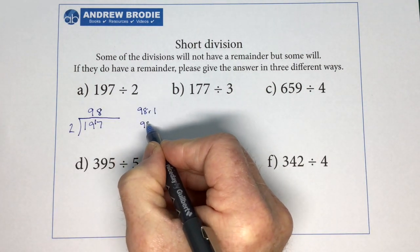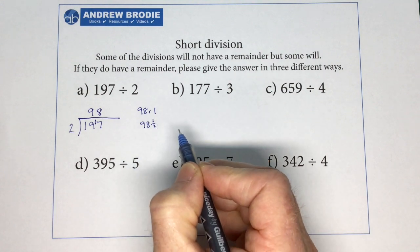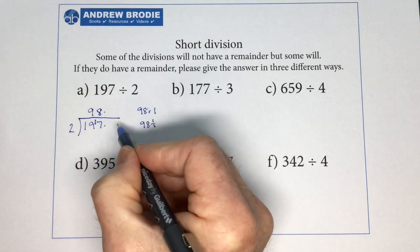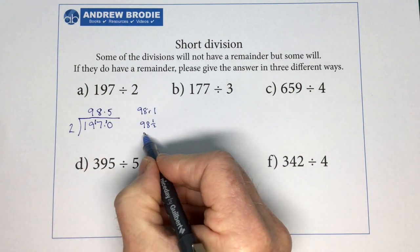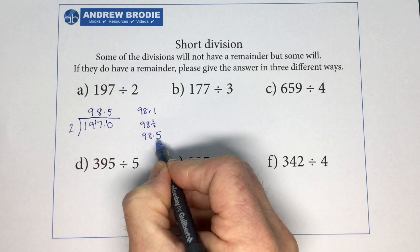Or we could say we've got 98 and a half. Or we could put a decimal point there and there. Bring the remainder with us. How many 2s in 10? There are 5. So 98.5.